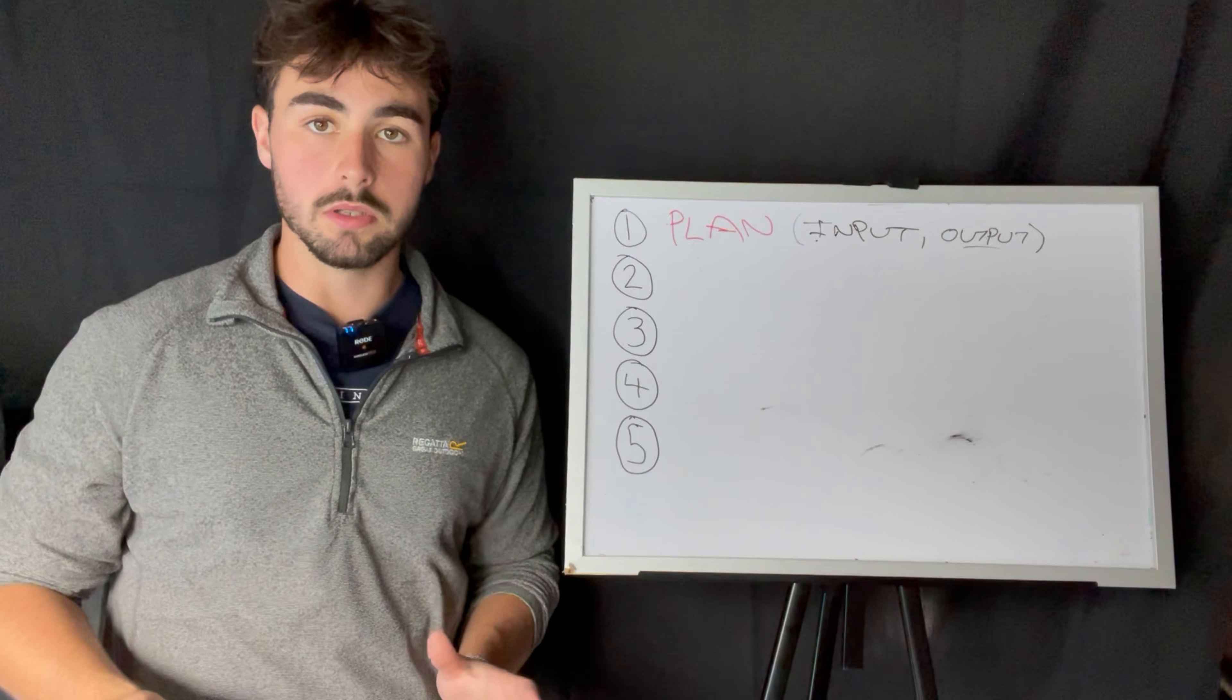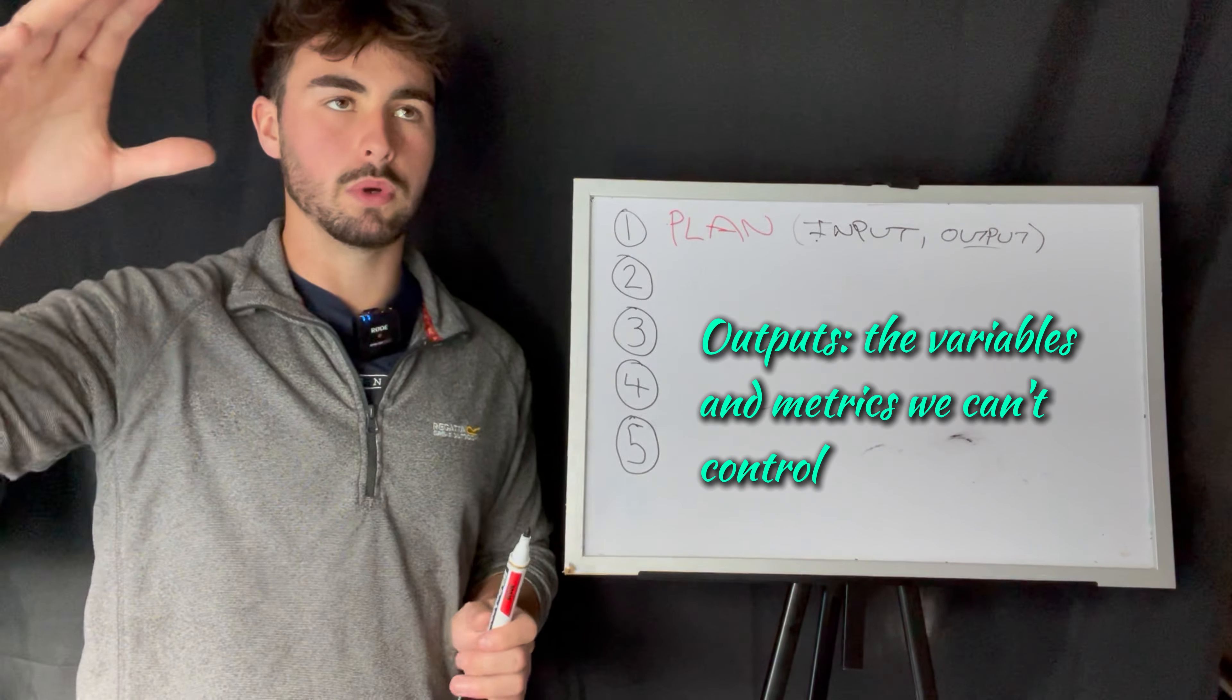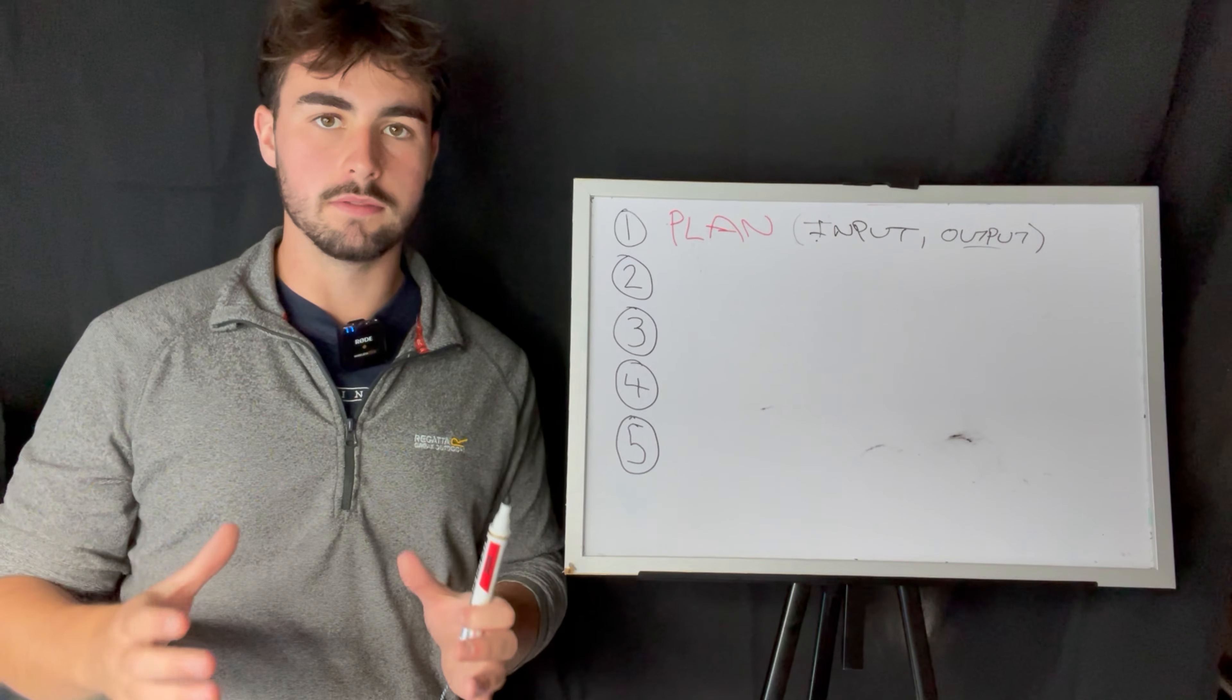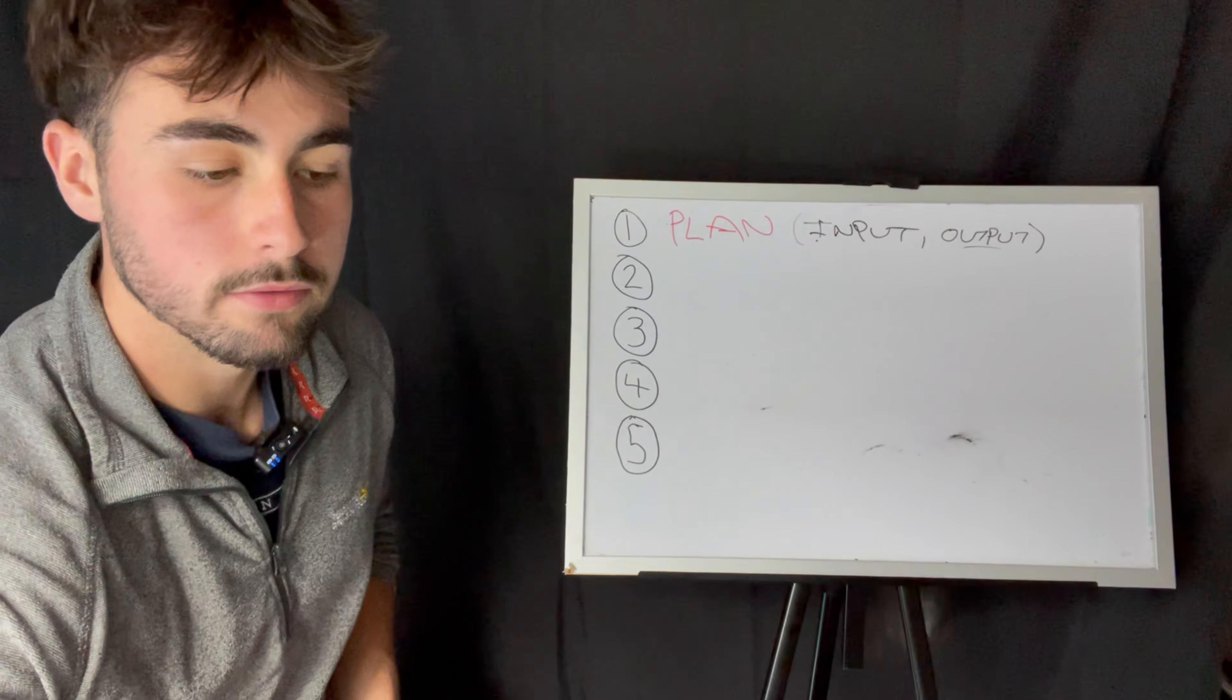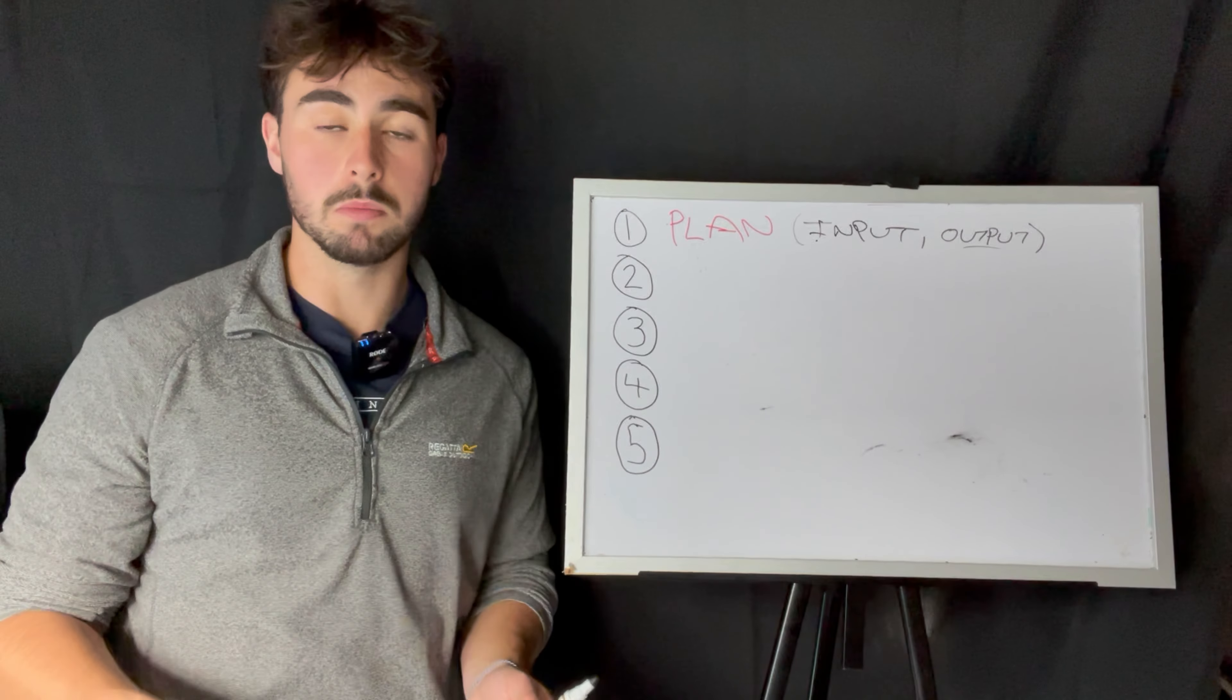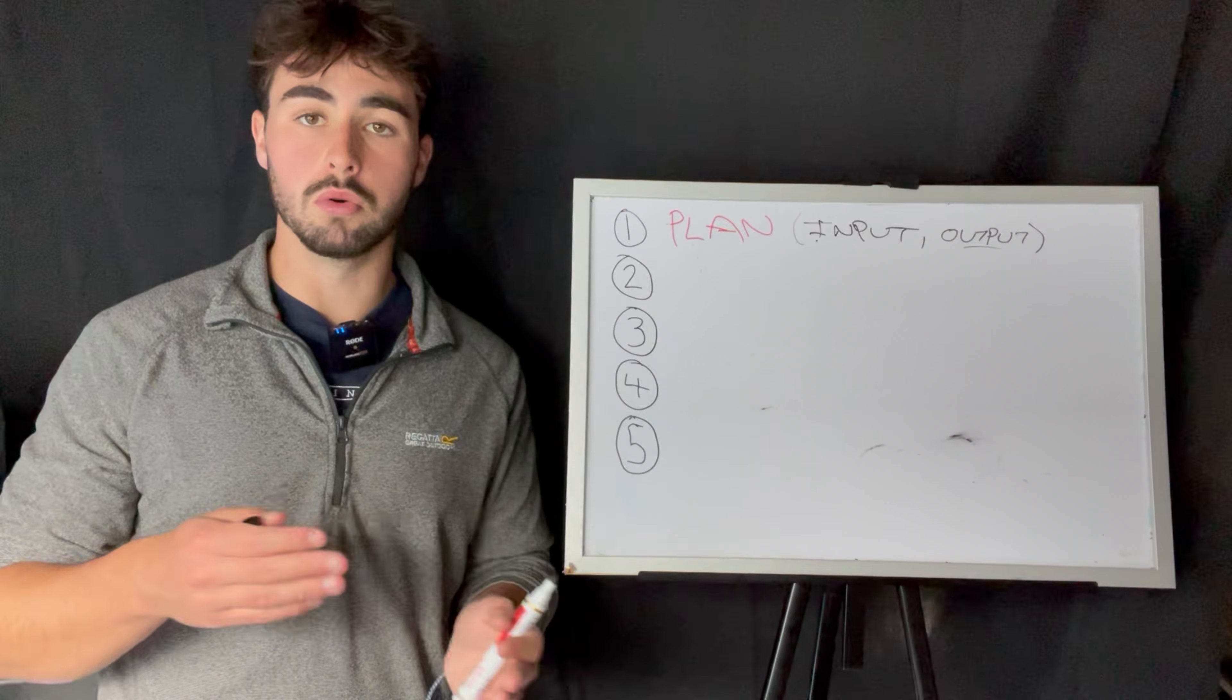When we're talking about outputs, these are things that we can't control. These are variables that we're projecting, manifesting, fantasizing over. We can put inputs in to try and get close to the output as possible, but we can never 100% accurately predict what's going to happen on the output end.